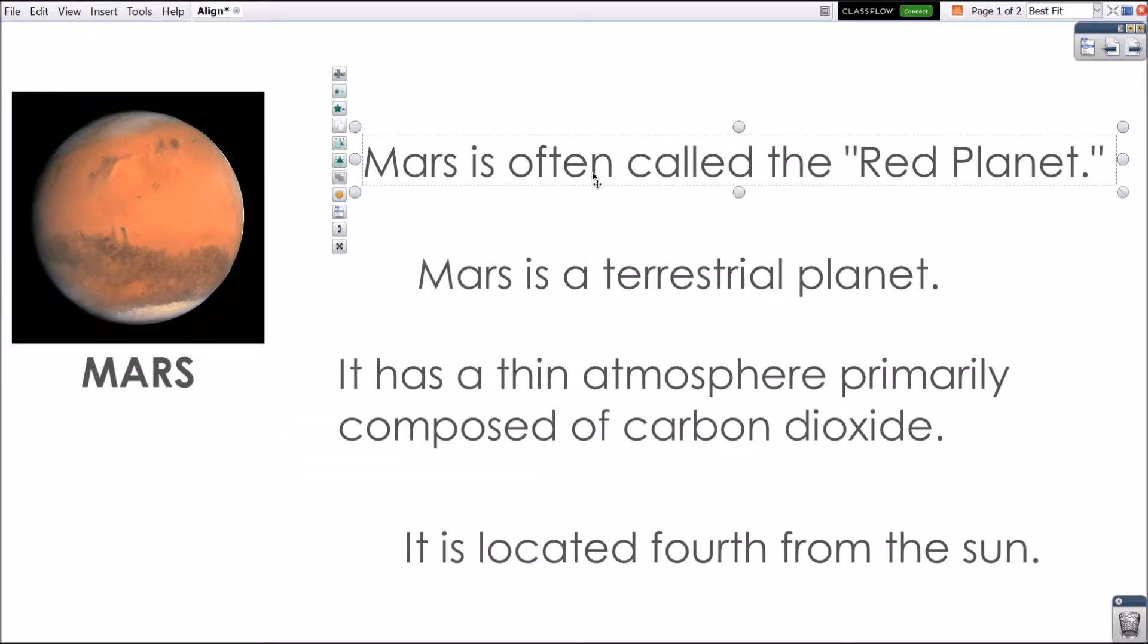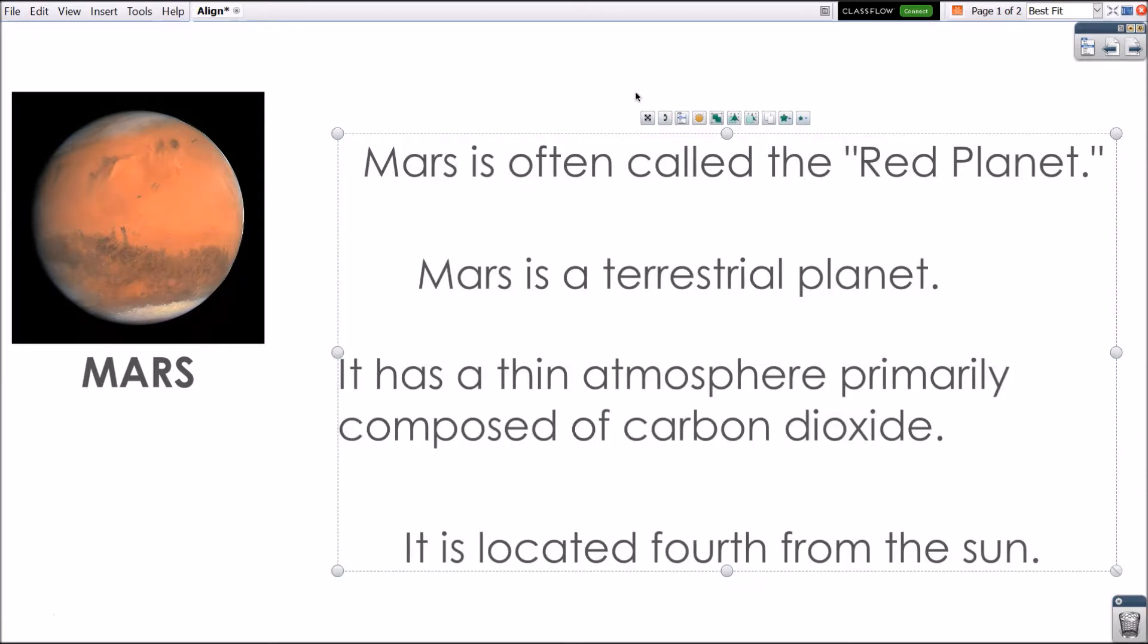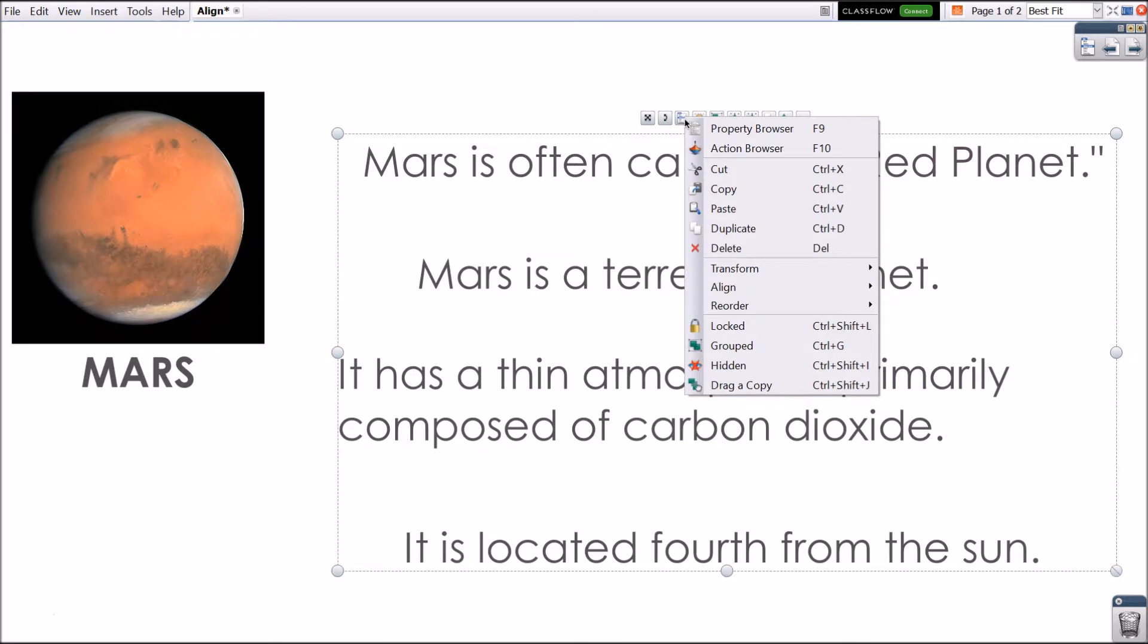Next, we can align these separate text boxes by following the same process. Select all of the objects and choose Object Edit Menu. Go to Align and select Align Left.